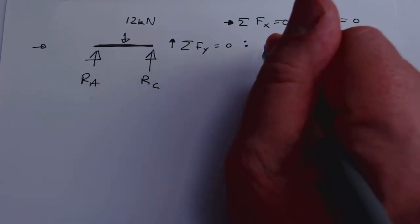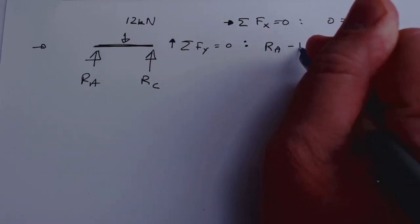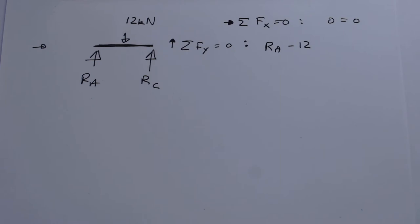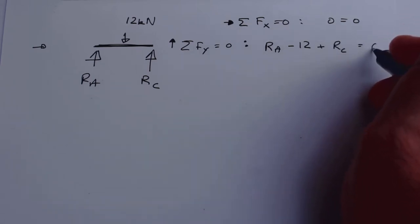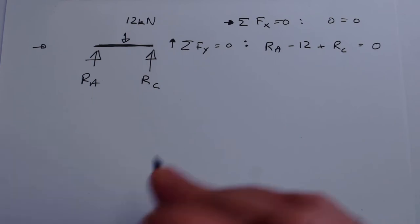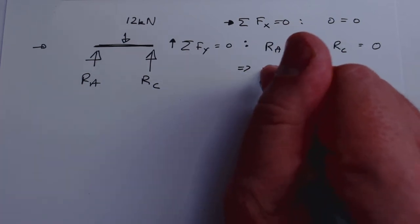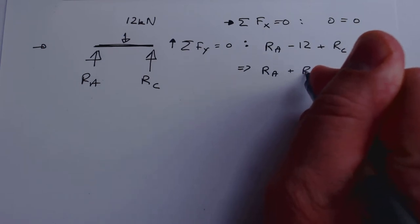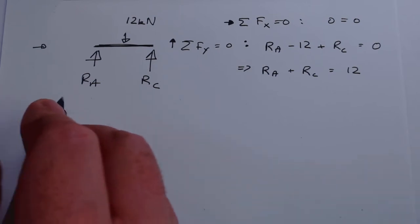Summing forces in the y-direction: RA is going to be positive, then minus 12 going downwards — we're working in kilonewtons — then plus RC, and that equals zero. Let's rewrite this with unknowns on the left: RA plus RC equals 12.